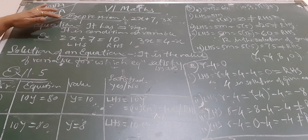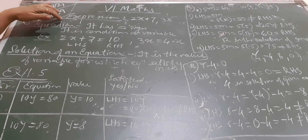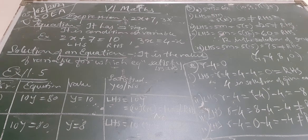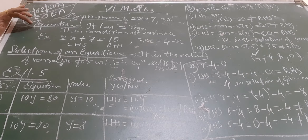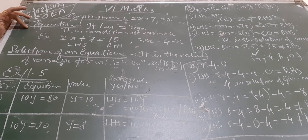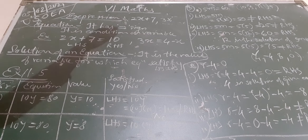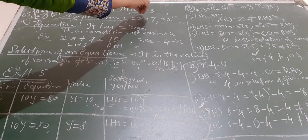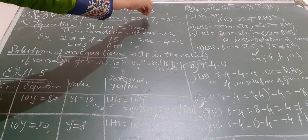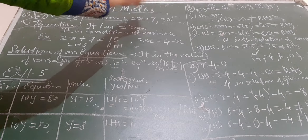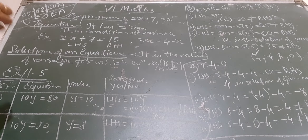Till yesterday's portion we have studied what are the variables, what are constants, and algebraic expressions. Expression is the combination of constants and variables along with the algebraic operations — operations means addition, subtraction, multiplication, divisions, all these.